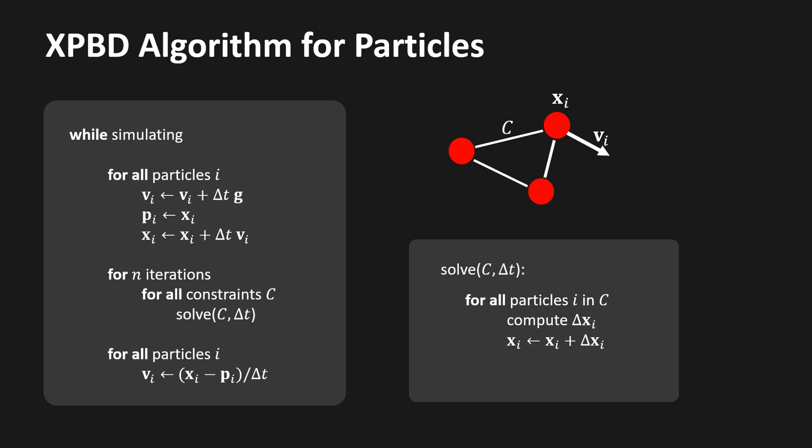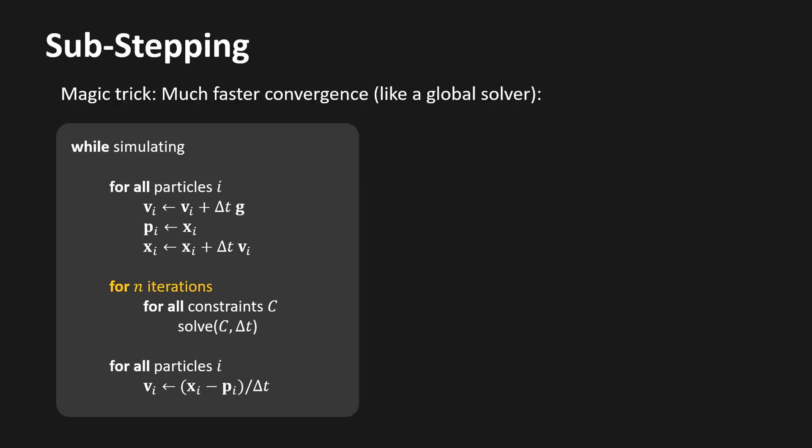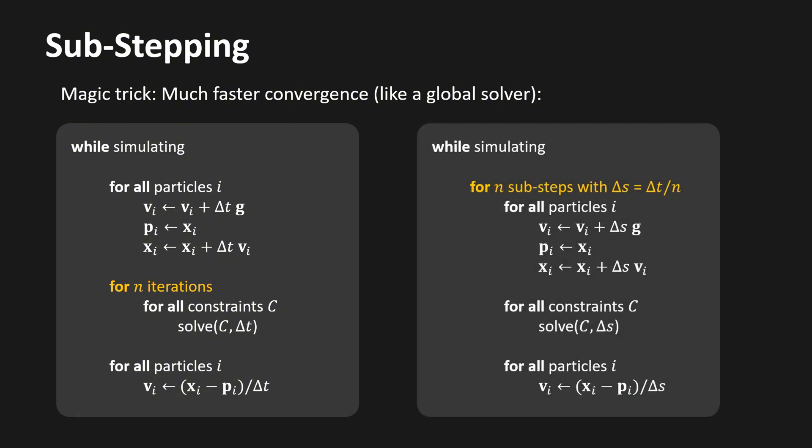What I showed you is called a local solver — it solves each constraint one at a time. Local solvers are much easier to implement and understand than global solvers, which solve all constraints simultaneously. The only disadvantage of local solvers is that they converge more slowly, which makes joints look stretchy. Fortunately, there is a super simple method to solve this problem: instead of performing n iterations over all constraints, we use a single iteration but subdivide the simulation step into multiple sub-steps. This simple modification makes our local solver converge as fast as global solvers.